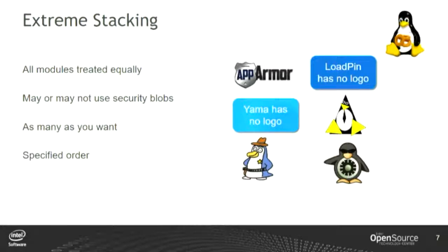Extreme stacking is what happens when we finally make it so you can have any set of security modules you want. There are a lot of challenges. You want to treat all modules equally, as many as want to use security blobs. By the way, if you can have separate security modules, you can break up SELinux — take the multi-level security part out, take the network controls out, make them separate modules. So you don't have to have the MLS module if you're not using it, or the type enforcement module if you just want to do multi-level security. You can specify the order that modules occur.